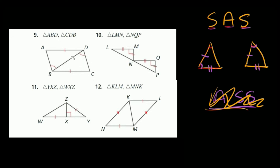Let's run through a few examples. Number 9: triangle ABD and triangle CDB. Are these two triangles congruent? Well, first we can only see that one side is congruent — this one and this one. But this side that both triangles share, or have in common, is congruent to itself. So do we have side angle side here?